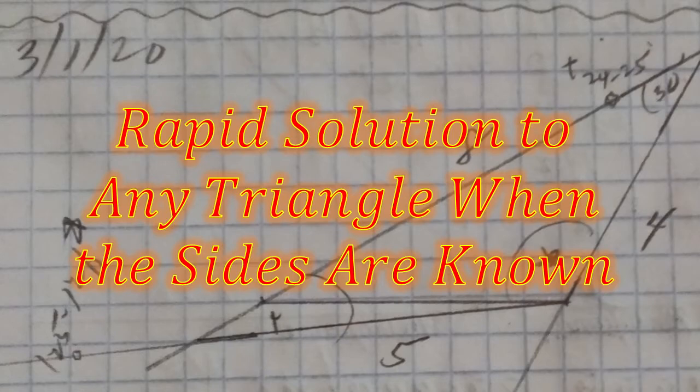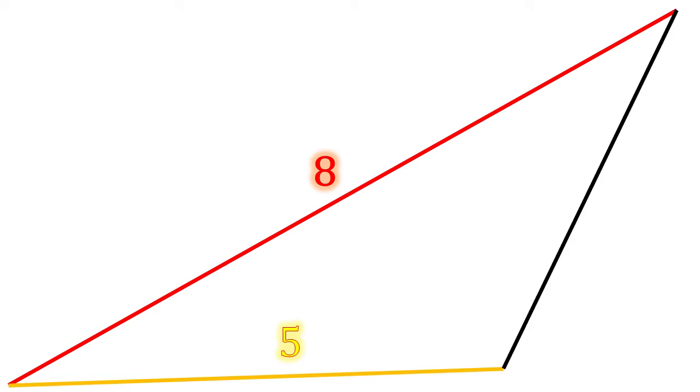Alright, so our rapid solution to any triangle when the sides are known. Let's go ahead and draw a line and we'll label it 8, we'll draw a second line in yellow, label it 5, and a final line in black and label it 4. Now, the 4-leg we'll call A, the 5-leg we'll call B, and the 8-leg we'll call C.